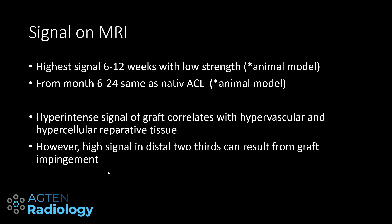The signal on MRI depends on time. In an animal model the highest signal was observed between six to twelve weeks and high signal was also associated with low strength. It took about six to twenty-four months to have the same signal intensity as the native ACL. Hyperintense signal correlates with the hypervascular and hypercellular reparative tissue phase and is considered normal within the first year. However, high signal in the distal two-thirds can also result from graft impingement.